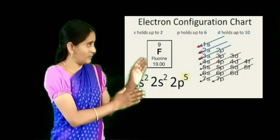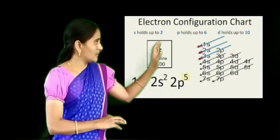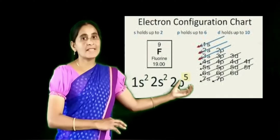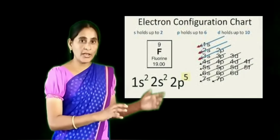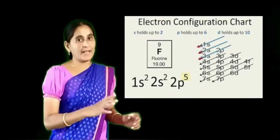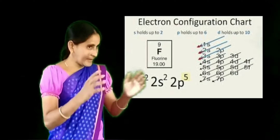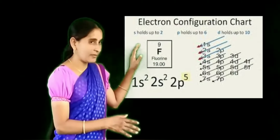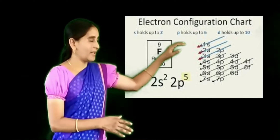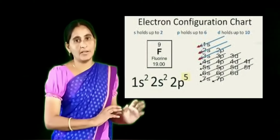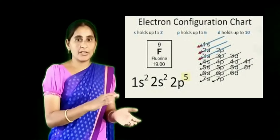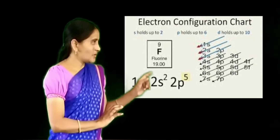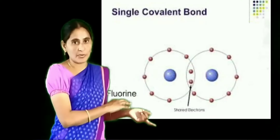Fluorine has 2 electrons in K shell and 7 electrons in L shell. Fluorine is in need of 1 electron. Another fluorine atom is similar — it also has 2 electrons in K shell and 7 electrons in L shell. Both fluorines are ready for mutual exchange of the electrons. So both will exchange the electrons mutually.